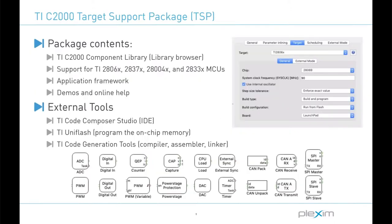To enable code generation for TI C2000 MCUs, the TI C2000 target support package, or TSP, is required. This package provides the TI C2000 target library blocks and the application framework for the supported TI MCUs. The package also comes with demo models and extensive documentation. One key strength of the Plex embedded workflow is that peripherals such as the PWM, ADC, and communication capabilities like CAN and SPI are configured in the Plex schematic using components from the Plex library — we call these target IO blocks. External TI tools are used behind the scenes to compile the code and deploy the application to the MCU directly from Plex.